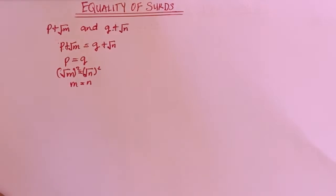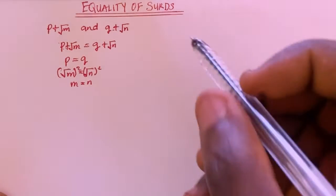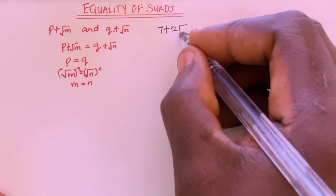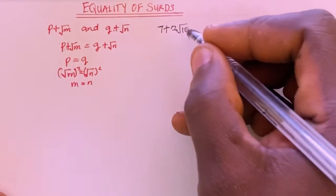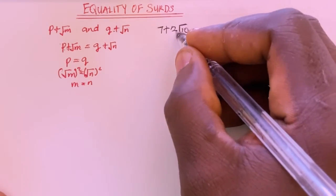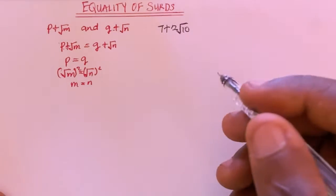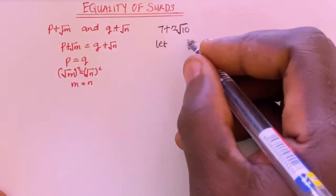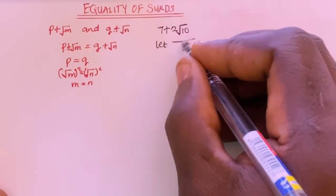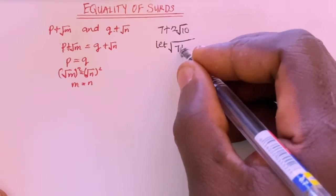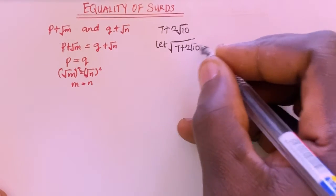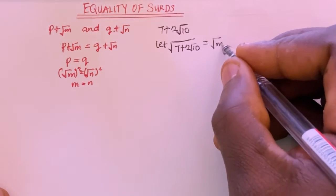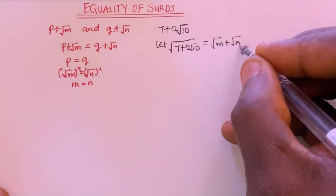Now suppose we are given an expression 7 plus 2 root 10, and we are asked to find the root of this expression. The first thing we need to do is say: let the square root of 7 plus 2 root 10 equal root of M plus root of N.